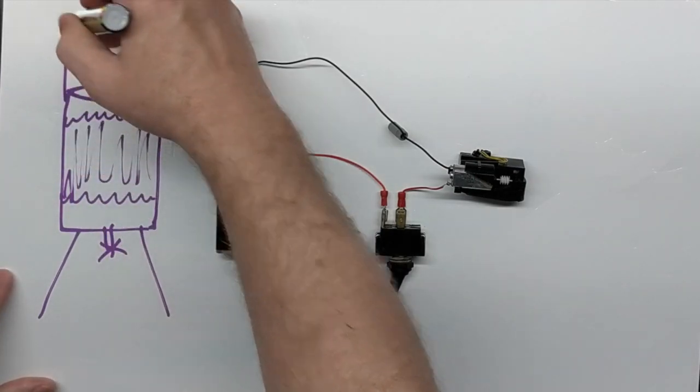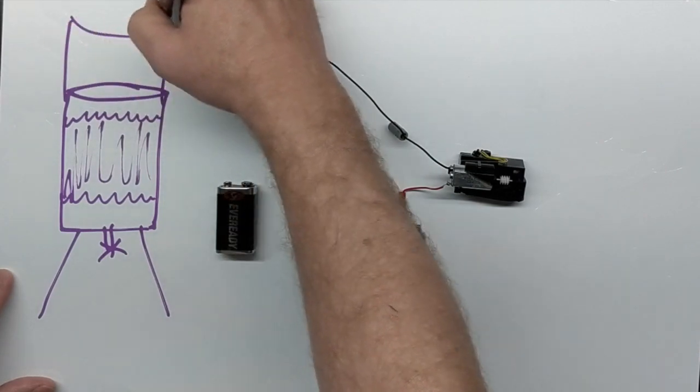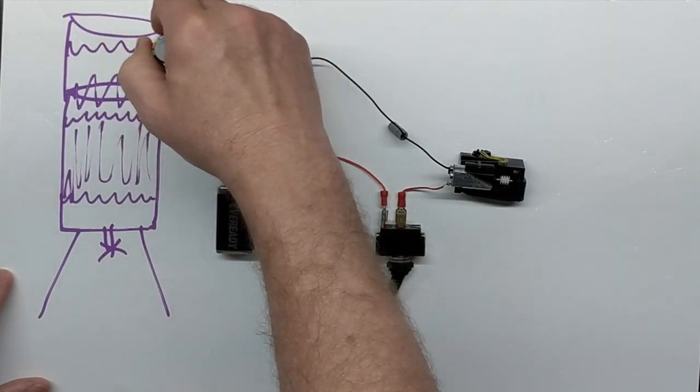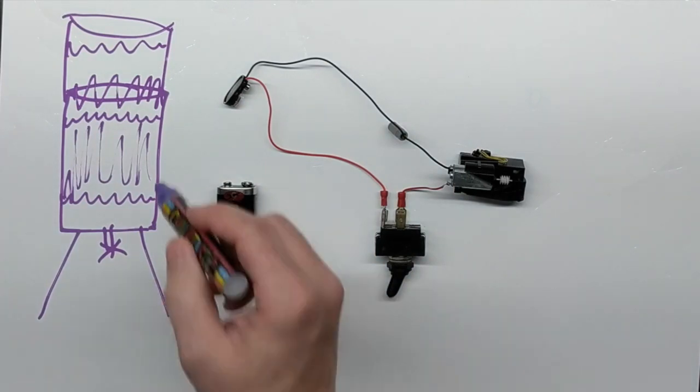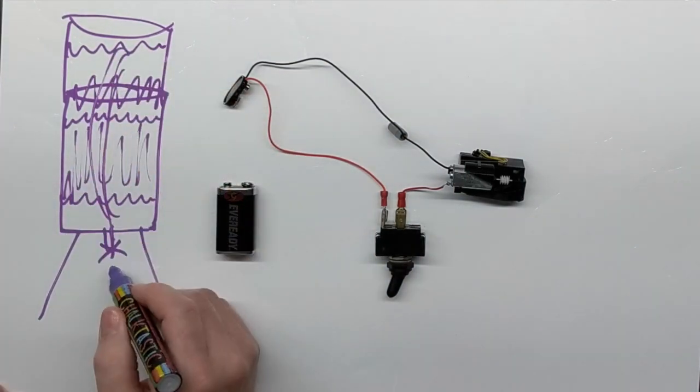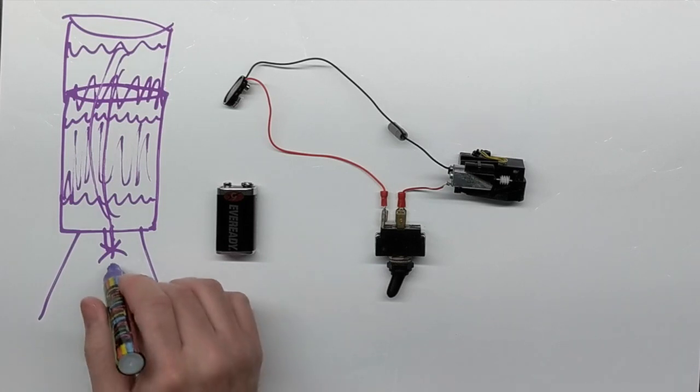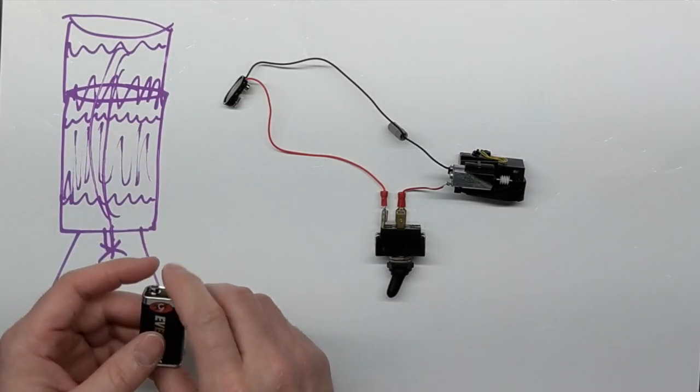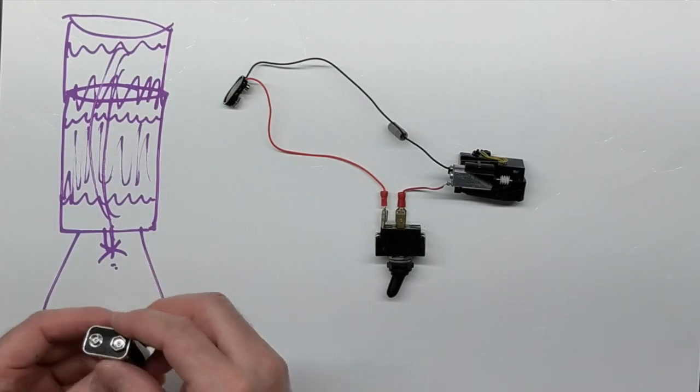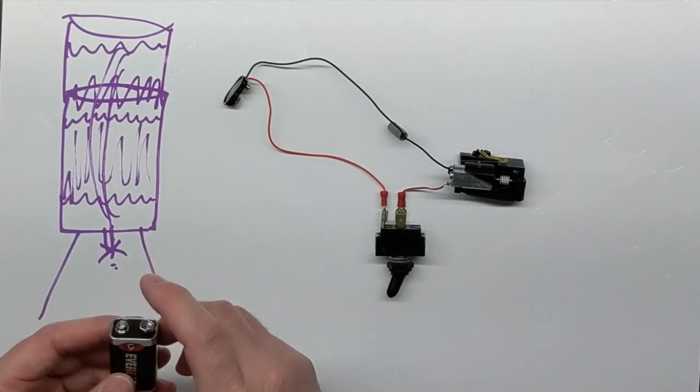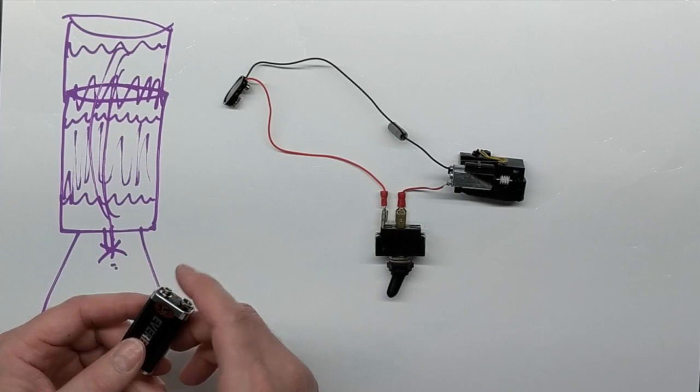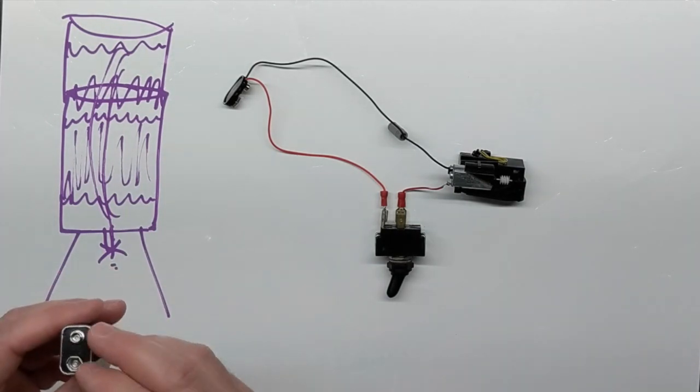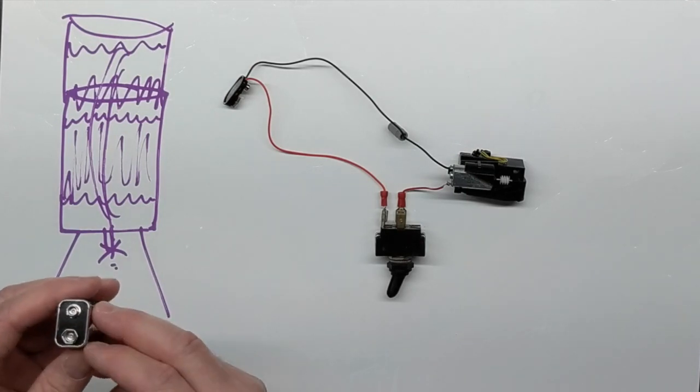So our pressure is going to change based on the level in this tank. And of course, if we had an even taller tank with the water level even higher, then of course our pressure will be greater at the actual valve or output. So when we think about battery voltage, we're kind of doing the same thing as measuring a pressure.